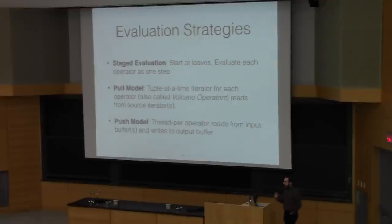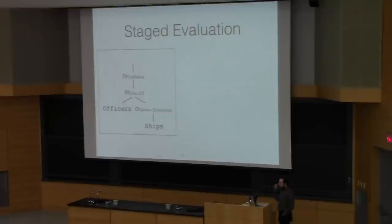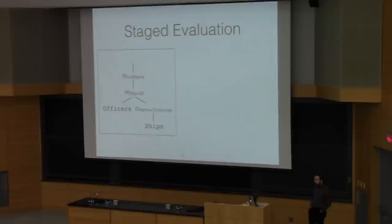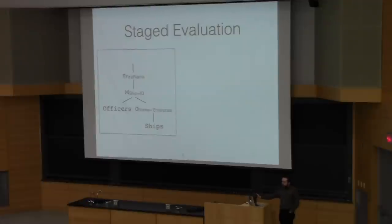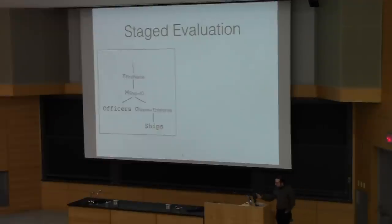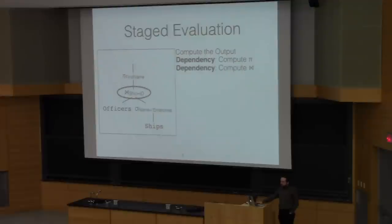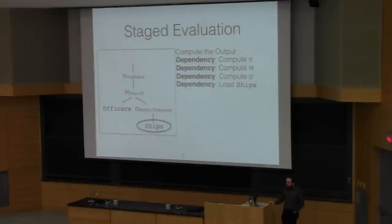So, how do we evaluate relational algebra expressions? Here's a simple expression — the same one from last time. If I want the output of the projection operator, I need to start all the way at the bottom. The projection depends on the join, the join depends on the selection, and the selection depends on ships. So the very first thing I need to do is load ships into memory.